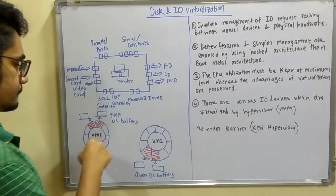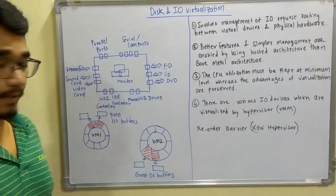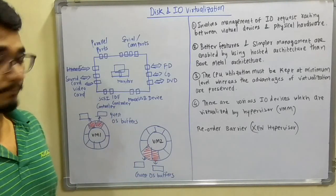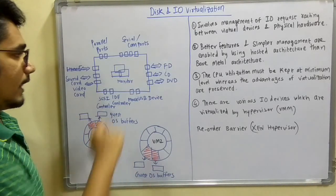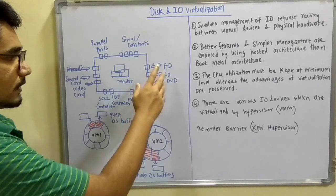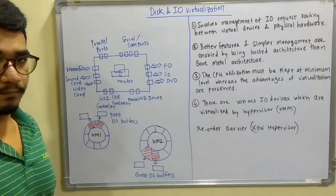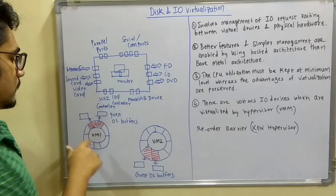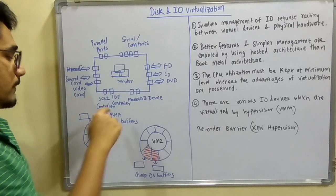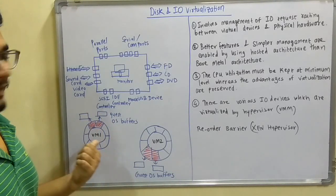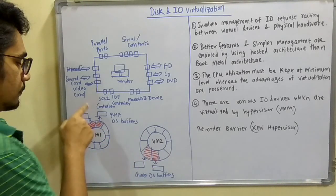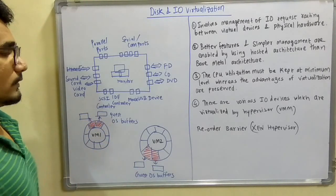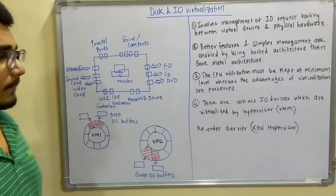This is how Xen works. If at the same time VM2 also wants a USB device which VM1 has, and FD device (floppy disk), floppy disk it can give because VM1 has no control over it, but USB device is still with VM1. So VM2 wants to release this and acquire it.